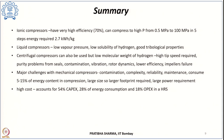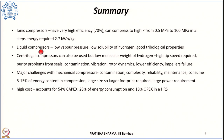To summarize, ionic liquid compressors have very high efficiency, even higher than 70%. They can compress hydrogen to high pressures — from a suction pressure of 0.5 MPa to a delivery pressure of 100 MPa — in as few as 5 compression steps. They are very energy efficient, requiring 2.7 kWh/kg as against 4 to 5 kWh/kg for many reciprocating compressors. Key characteristics of the ionic liquid include low vapor pressure, low solubility of hydrogen, and good tribological properties, making them very favorable for hydrogen compression.